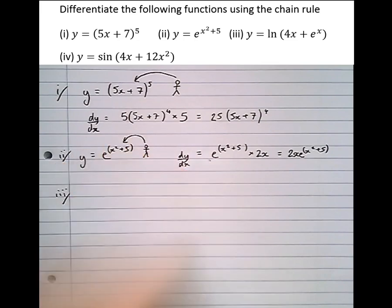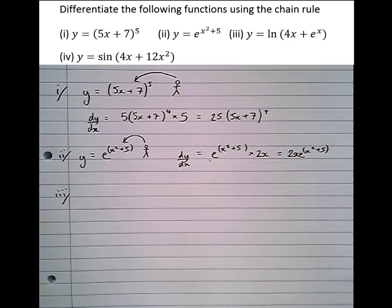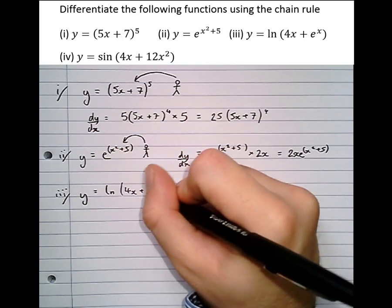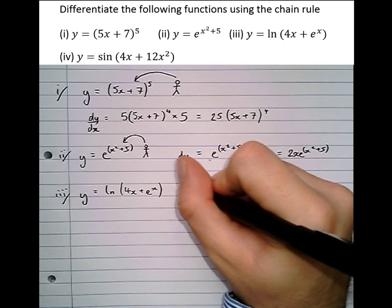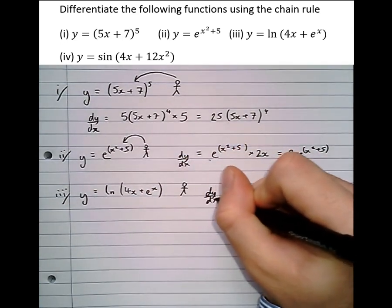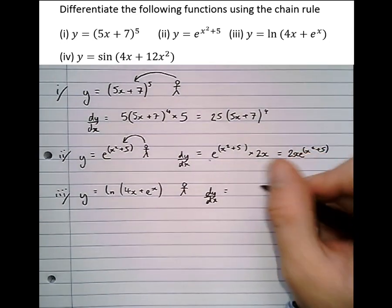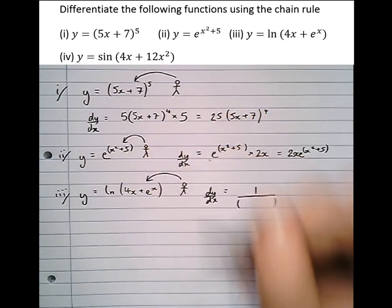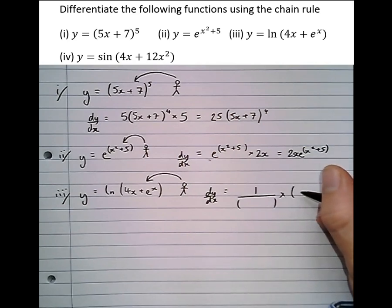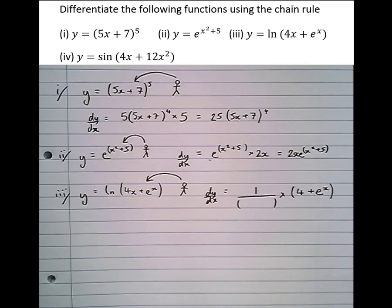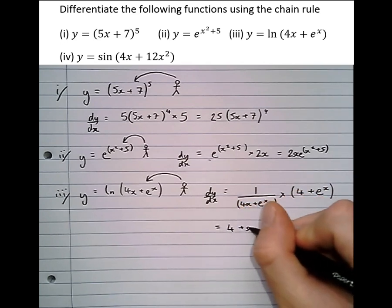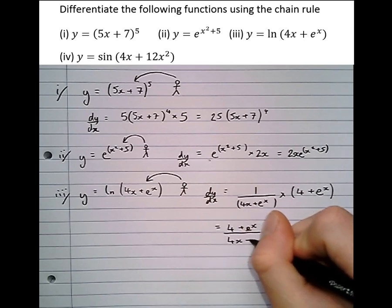Part 3, in the context of logarithms: y equals log of (4x plus e to the x). All that person sees is log of something, and log of something differentiates to 1 over that something. Not being happy with that, we look inside the bracket and differentiate it. The differential of 4x plus e to the x is 4 plus e to the x. So the result is (4 plus e to the x) over (4x plus e to the x).